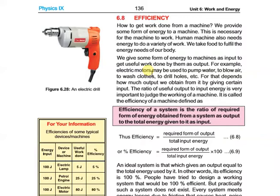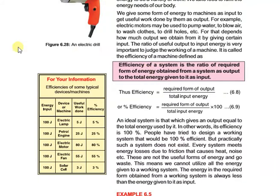For an ideal system, the required form of output energy equals the total input energy. We divide the useful output energy by the total input energy to get efficiency. If we want efficiency as a percentage, we simply multiply by 100.